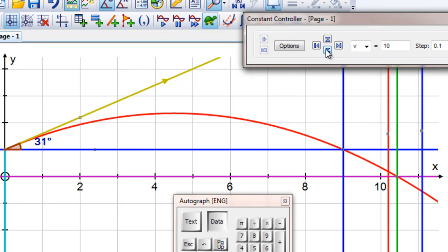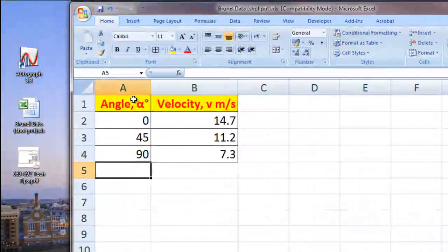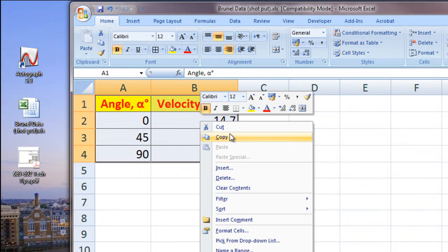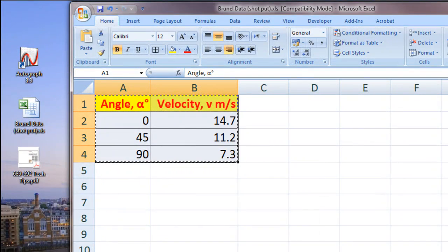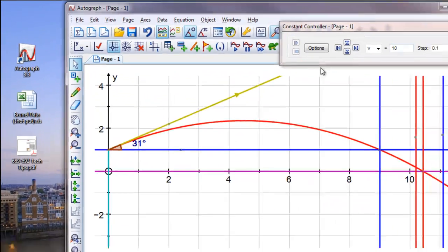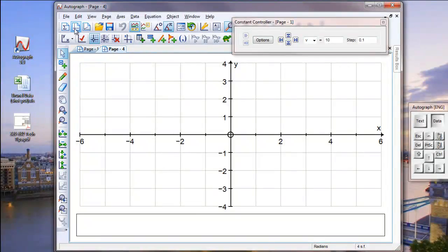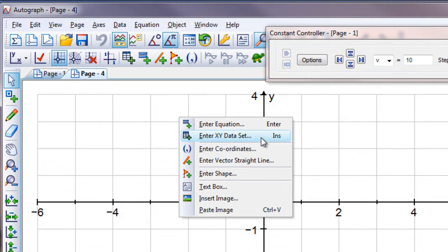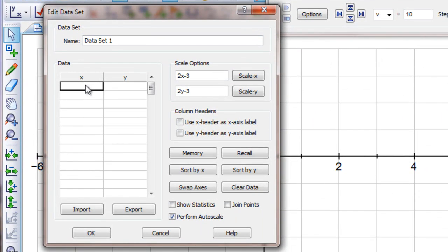Now, there's some research at Brunel University that had a look at this and had a look at the velocity that you could achieve from different angles of throw. So I've looked at this spreadsheet data. It's only three points, but it's enough to get a feel for this. So we're going to plot these as a set of data. Just right-click, paste them in. Notice the column headers come too. So if we tick those two boxes, we label the graph correctly.